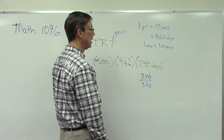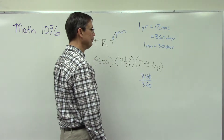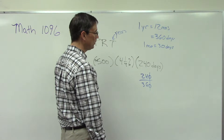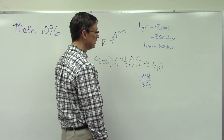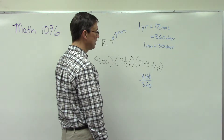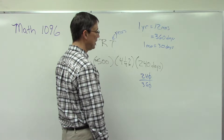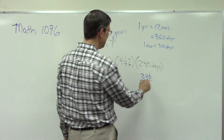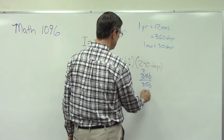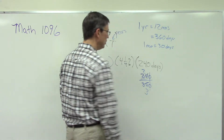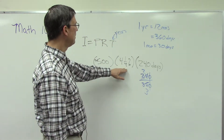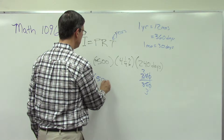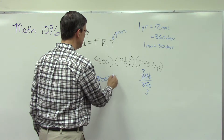Let's simplify 240/360 right away. We can divide by 12, which gives us 2 over 3. So the time is 2/3 of a year.